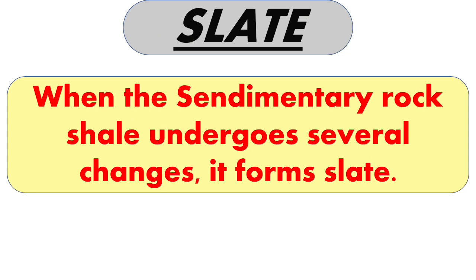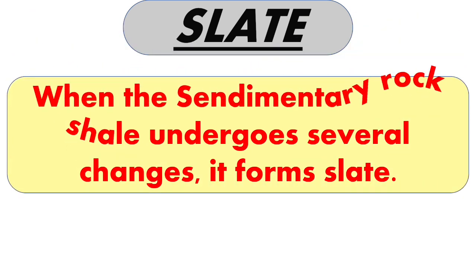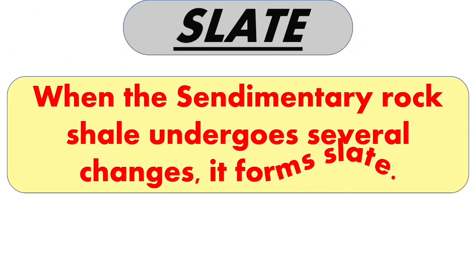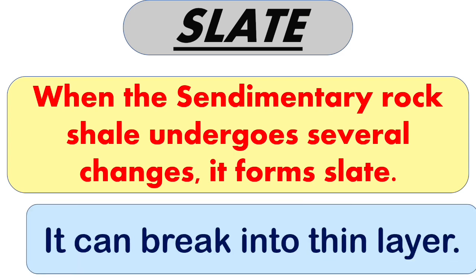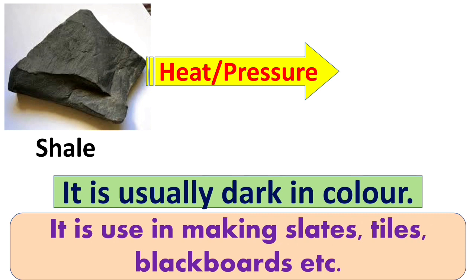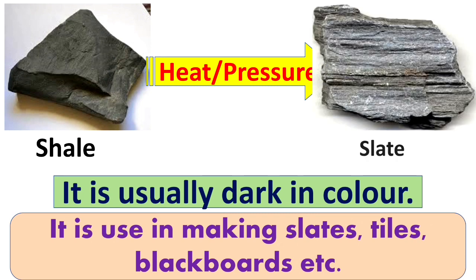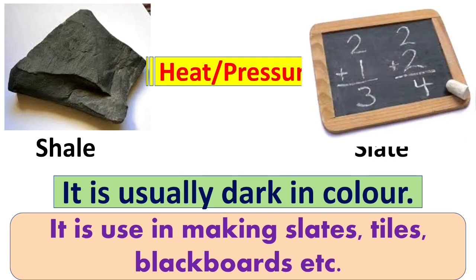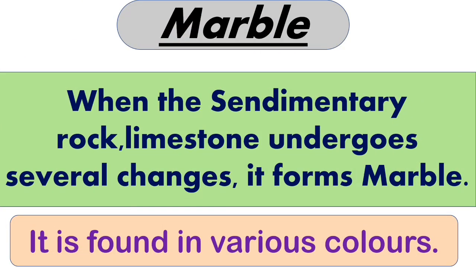The first one is slate. When the sedimentary rock shale undergoes several changes, it forms slate, and it can break into thin layers. This is shale, which is a sedimentary rock, and when it gets extreme heat and pressure it changes into slate, which is a metamorphic rock. It is usually dark in color and is used in making slates, tiles, and blackboards.